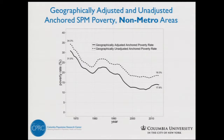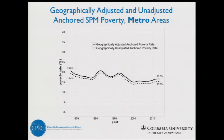In all of these graphs, the regular line is the geographically adjusted anchored poverty rates and the dotted line is the unadjusted rate. These graphs compare the adjusted to the unadjusted poverty rate for different subgroups and different regions of America. As you can see here for non-metro areas, geographically adjusting the supplemental poverty rate actually results in a decrease in poverty, because non-metro areas are relatively less expensive than other places in the country — so we adjust the threshold down and get a lower poverty rate there. For metro areas, the inverse is true to a slightly lesser extent.